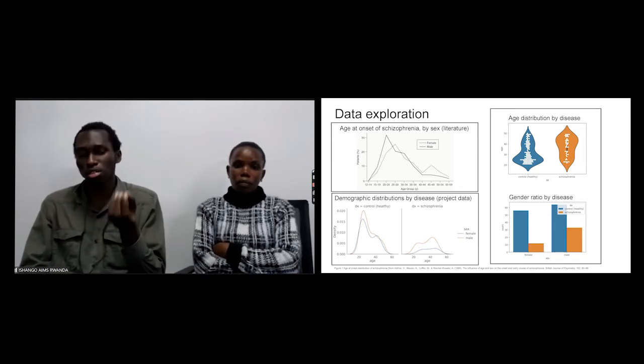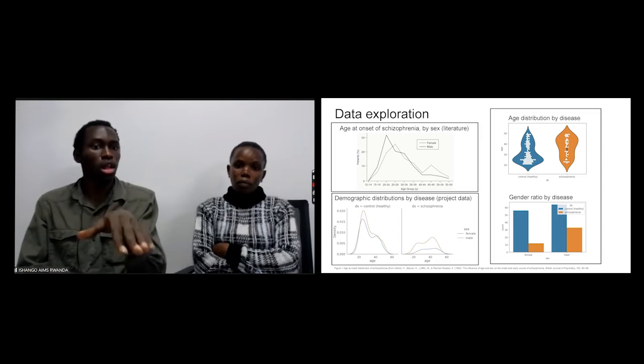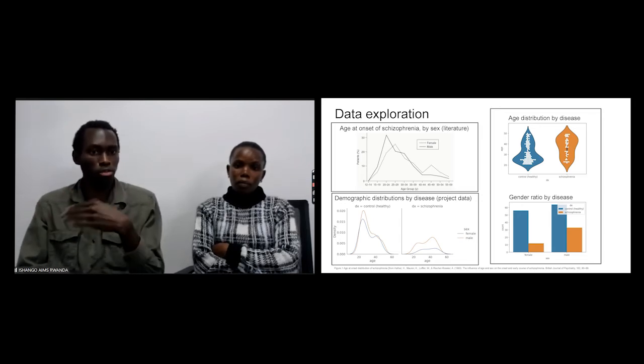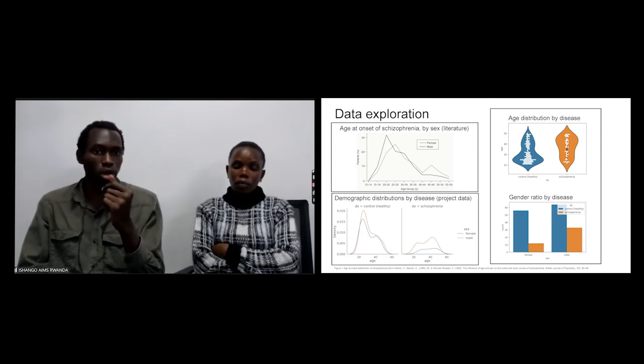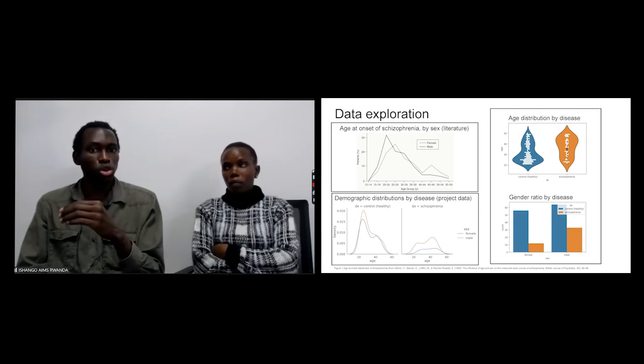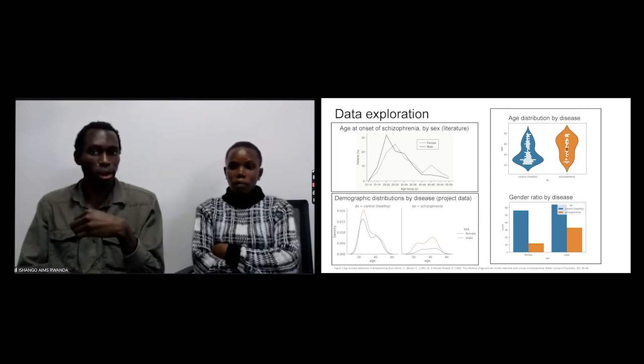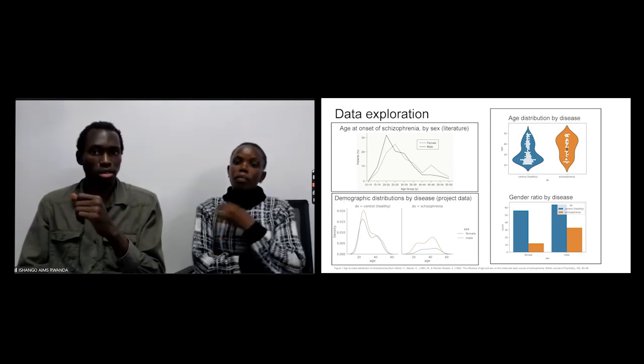Down here is our plot from our own data. We can see that the distribution is similar to that work from the literature review. Now we have to be sure we don't have that problem in our data. This is also more visualization to see how the data is distributed.